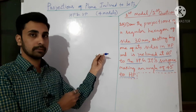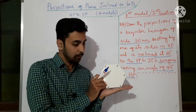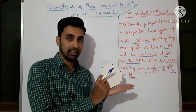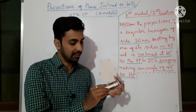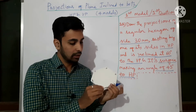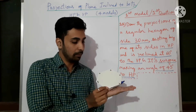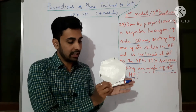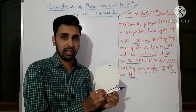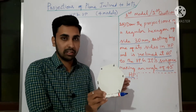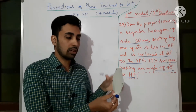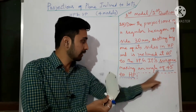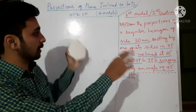If the edge is at 60 degrees to the VP, it will be like this. The edge is in HP and at 60 degrees to the VP — you can rotate it in either direction, it's your choice. Assume this is the base edge in HP and it is making 60 degrees with respect to the VP. You can tilt in this direction or that direction — we have the option in projections of planes. The surface of the hexagon is making 45 degrees to the HP.